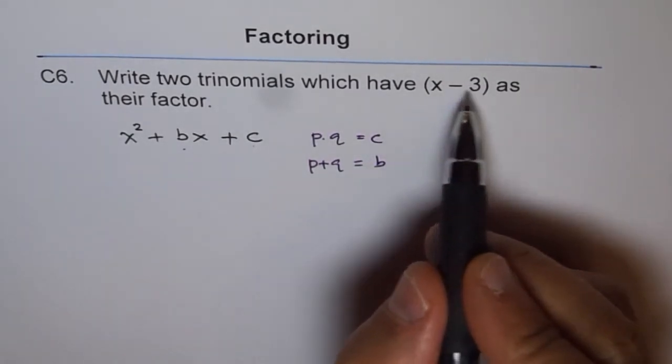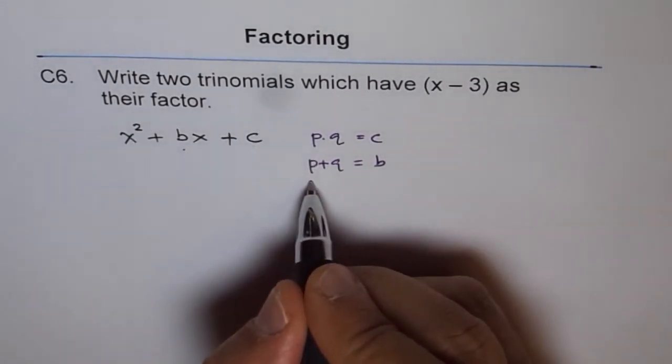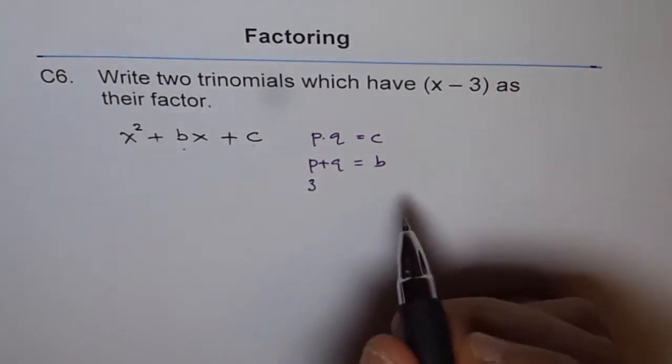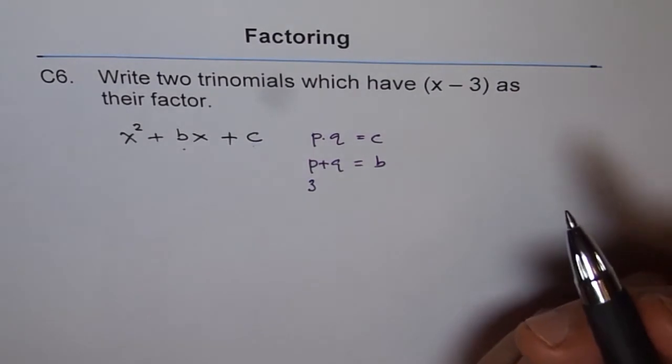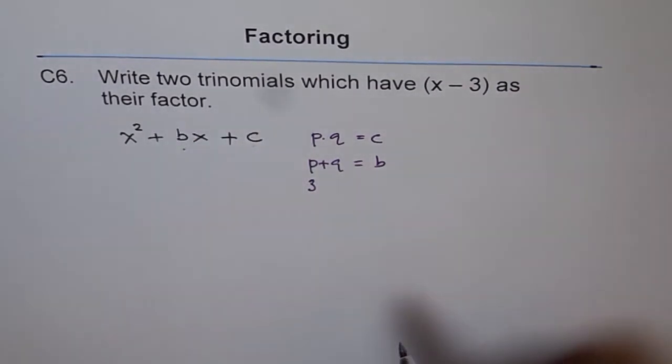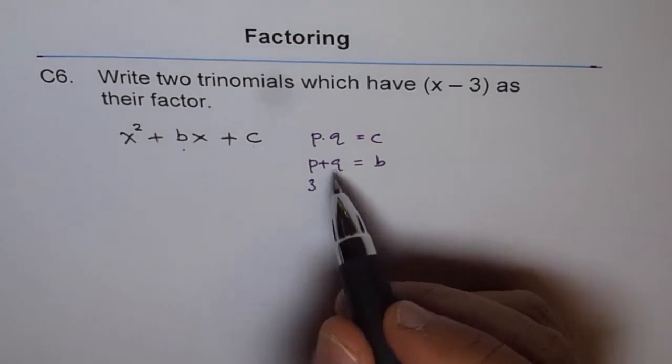And we know out of these two numbers, one number is 3. So let's assume p is 3. Then we can write q as any number. That is a choice to get two different polynomials. Let's assume q is 1.